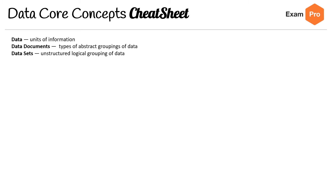The first concept here is data, which is units of information. Data documents are types of abstract groupings of data. Data sets are unstructured logical groupings of data. Data structures have some form of structure.